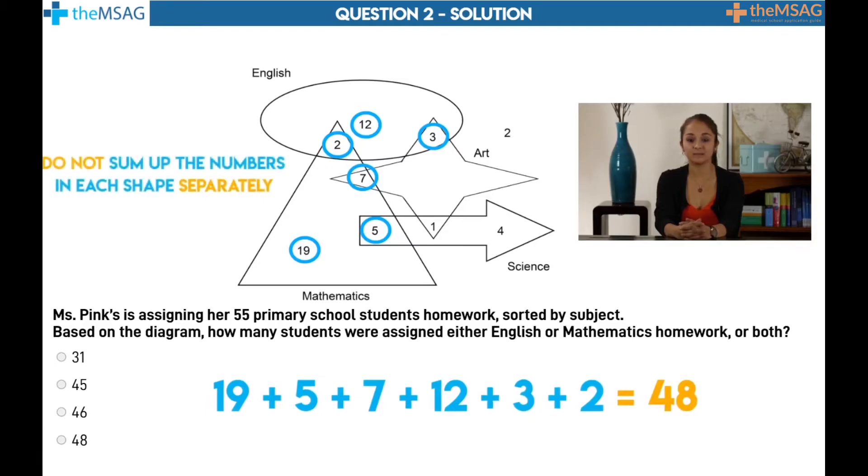Do not sum up the numbers in each shape separately and then add the results. This will result in the two which represents those assigned both English and mathematics homework being counted twice.